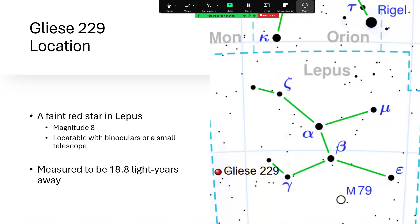Gliese 229 is a faint red star just on the border of the constellation of Lepus the Hare. From my point of view that's below Orion in the winter sky. Of course I'm in Cambridge in the UK in the northern hemisphere, so if you're in the south it'll be the other way up.